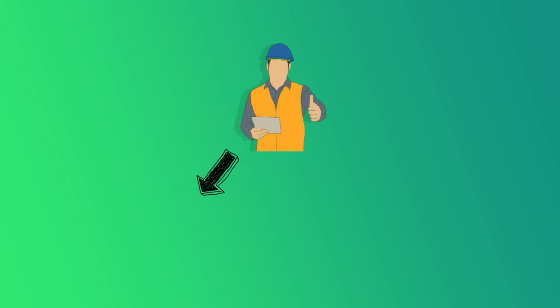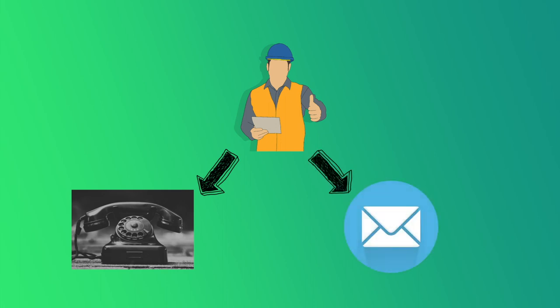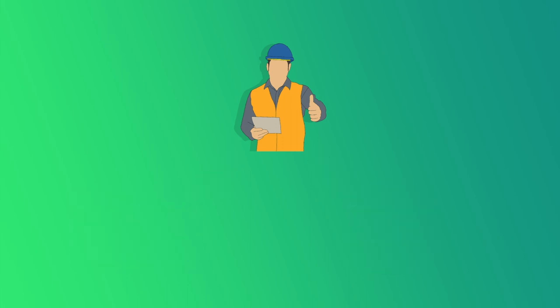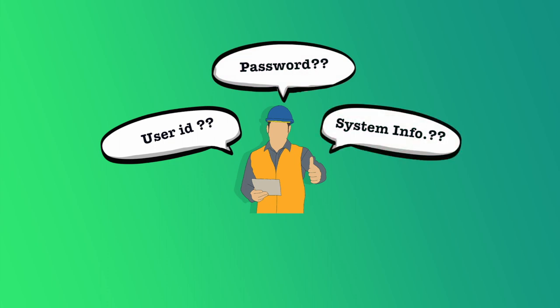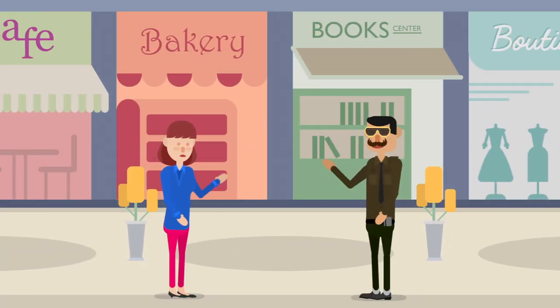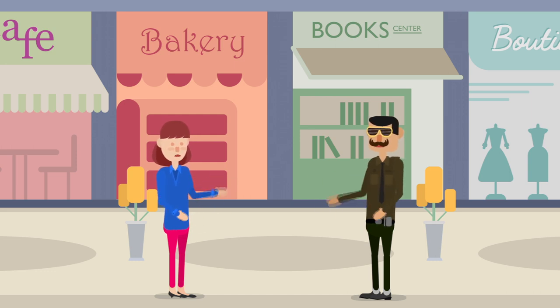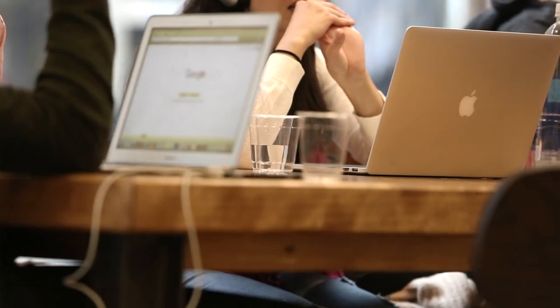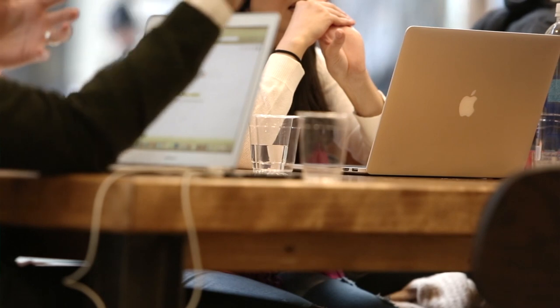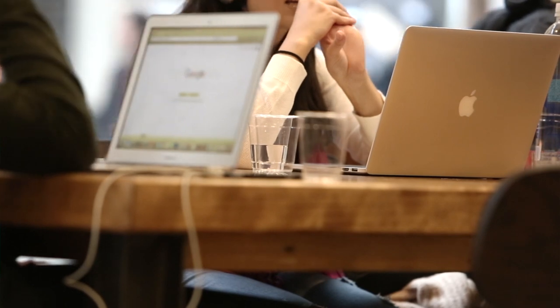A social engineer may approach you through a telephone or email, posing as a person from your information technology department or help desk, and may ask for your user ID, password, and other details such as system and network information. Alternatively, a social engineer may come to your organization under the pretense of a business need and request network connectivity or other sensitive information.